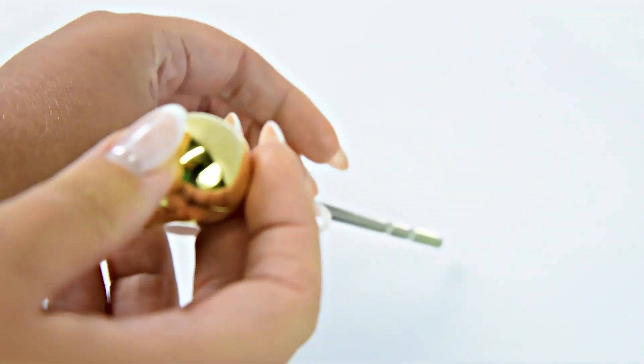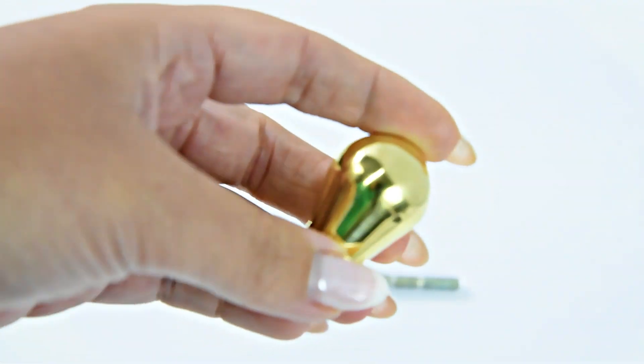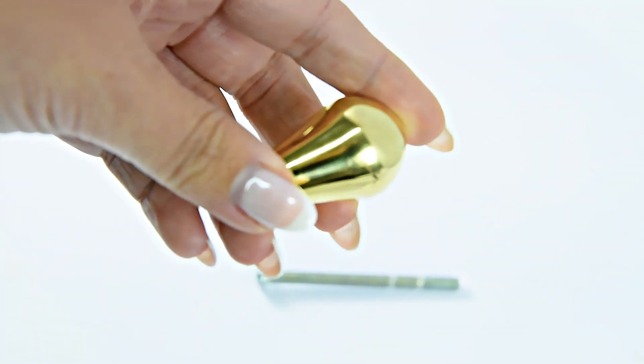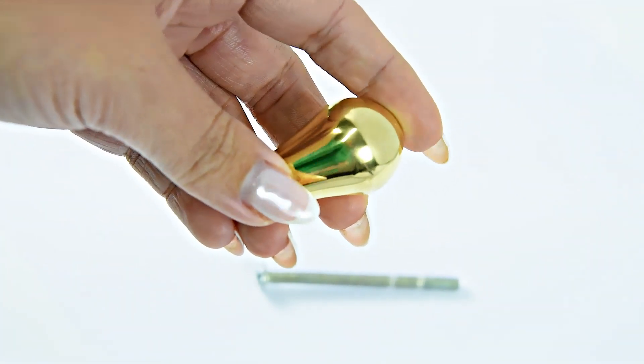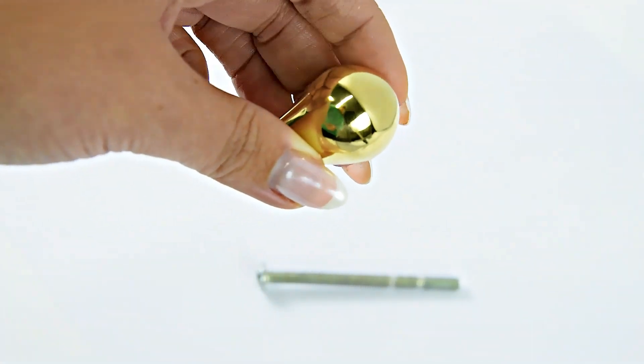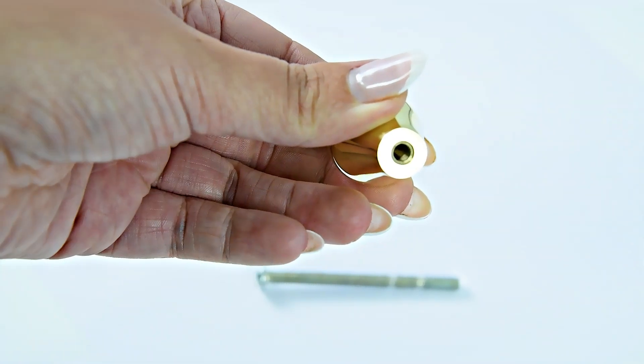The dimensions of this cupboard knob: the protrusion is 35mm, the width is 25mm, and the base is 12mm.